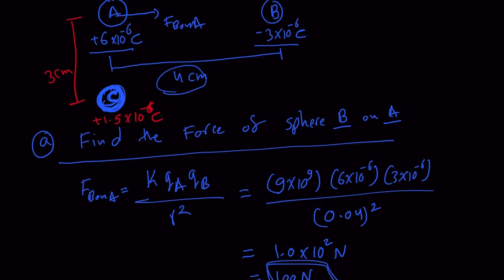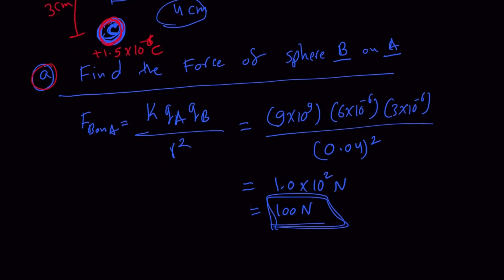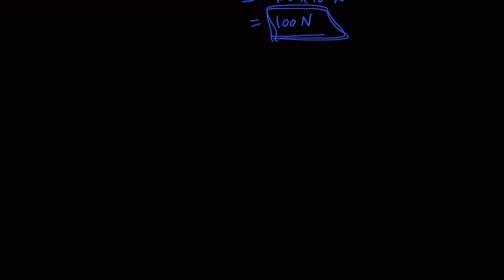We now need to find the net force on sphere A. In Part A we had a straightforward application with B exerting force on A. Now we've added sphere C with charge positive 1.5 multiplied by 10 to the minus 6, located 3 centimeters below A. To attempt this problem, we first draw a free body diagram for A — this is Part B, finding the net force on A. We represent A, B, and C as points.